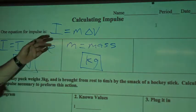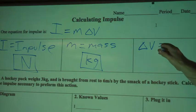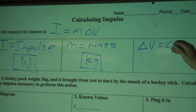After mass, we have delta V, and that is the change in velocity.